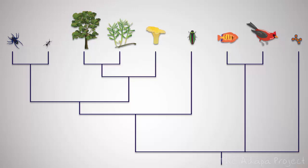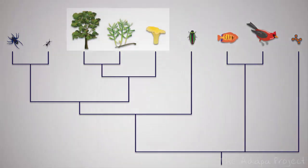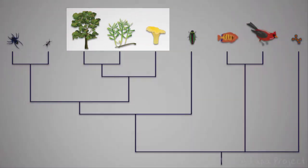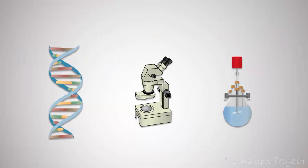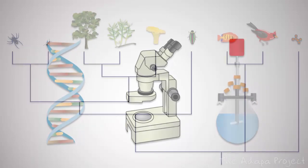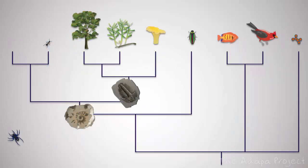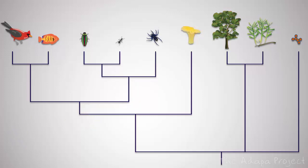Systematists are facing similar problems as you did earlier. For example, looks can be deceiving and are often not a good indicator of who is more closely related to whom. For the tree of all living organisms, systematists use different sources of information such as DNA similarity, morphology, structure, chemistry and physiological characters. New information is revealed constantly and the tree changes accordingly.